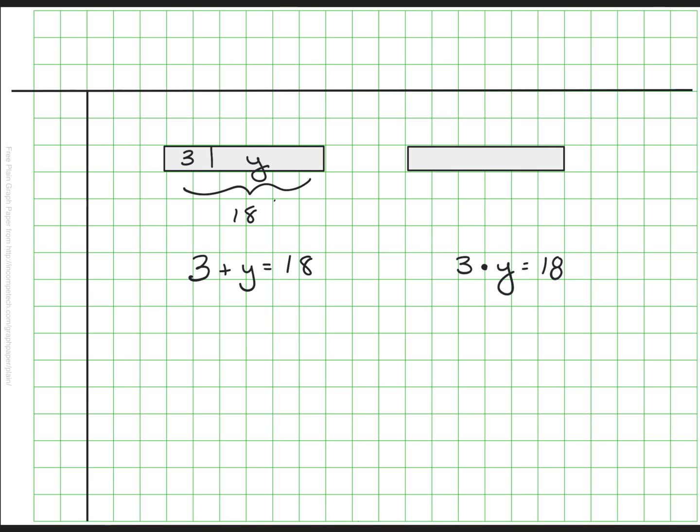Now let me try the one on the right. This one says 3·y=18. So this should look different. This time, I need to have three sections as equal as I can make it. And each one is worth a value of y. But again, the total is 18. So they have that in common.